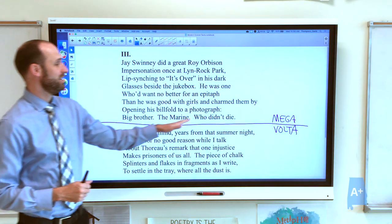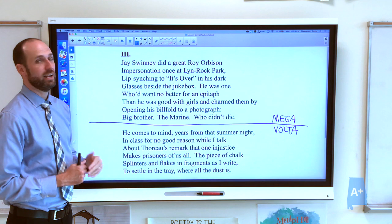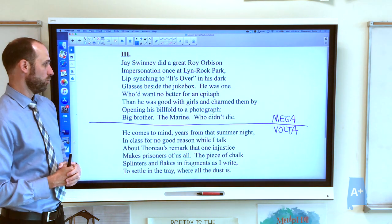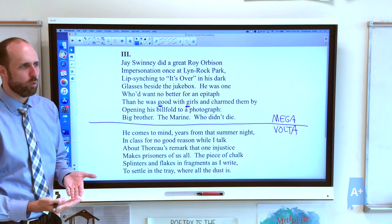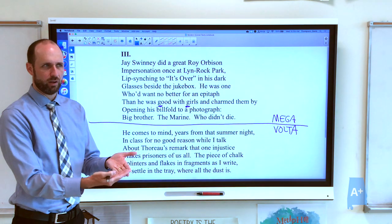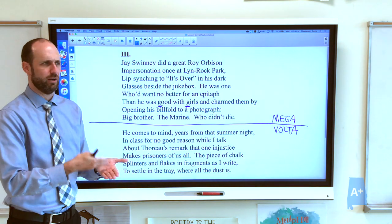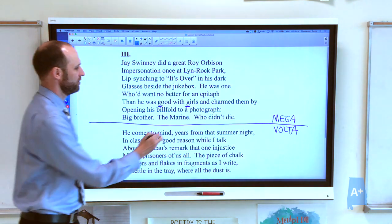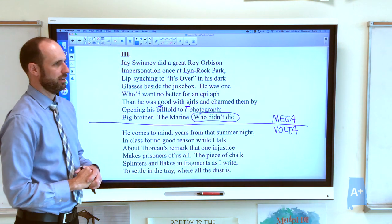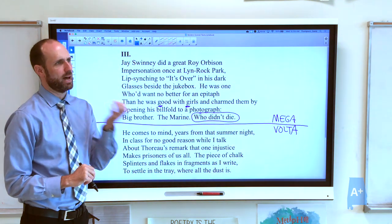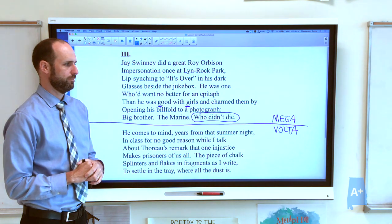Jay Sweeney did a great Roy Orbison impersonation once at Linrock Park, lip-syncing to It's Over in his dark glasses beside the jukebox. He was one who'd want no better for an epitaph than he was good with girls and charmed them by opening his billfold to a photograph. Big brother, the Marine, who didn't die. By just saying who didn't die, we get the idea that Jay Sweeney was also, like the previous two guys, drafted, and he's probably the only one who actually died in the war. We see that he was good with girls. Sometimes students are puzzled that he would open his wallet and show girls a conversation piece, something to talk about, pictures of his big brother, the Marine, and he's really proud of him, and he's fighting in the war. But our narrator, just in three words, in a fragmented sentence, shows us that this guy doesn't make it. He also becomes a body bag, and the only one who sort of dies in the legitimate battle of the Vietnam War.